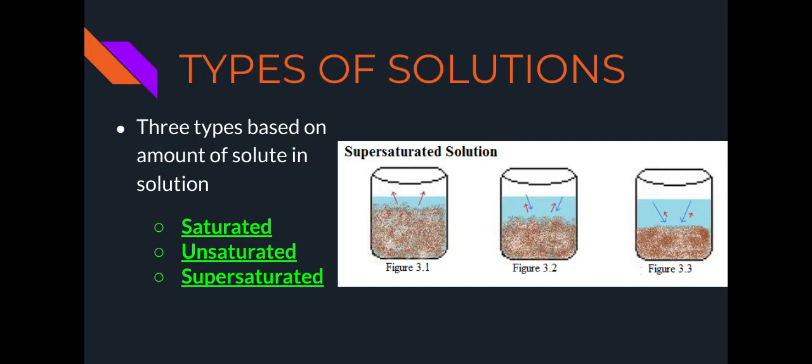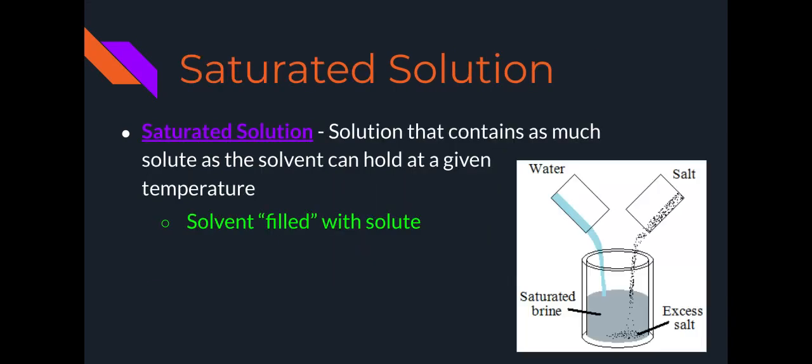There are different types of solutions. We have saturated, unsaturated, and supersaturated. And these three types of solutions are based on the amount of solute that is present in the solvent. So a saturated solution is a solution that contains as much solute as the solvent can hold at a given temperature. So you can kind of think that that solvent is full of solute and it can't hold anything else.